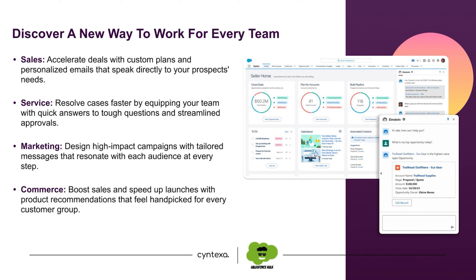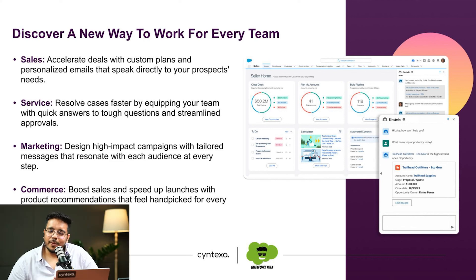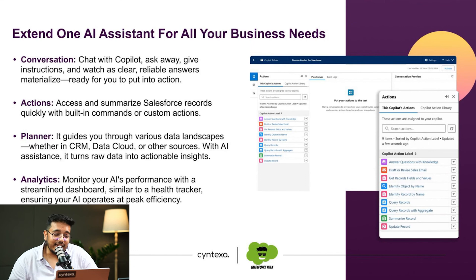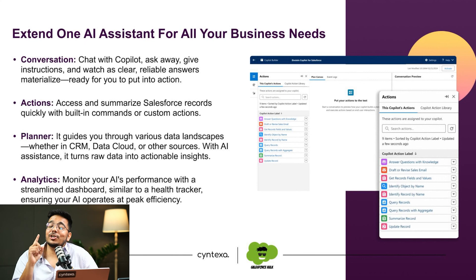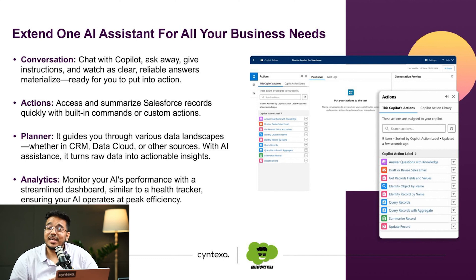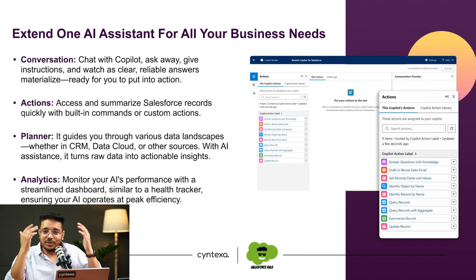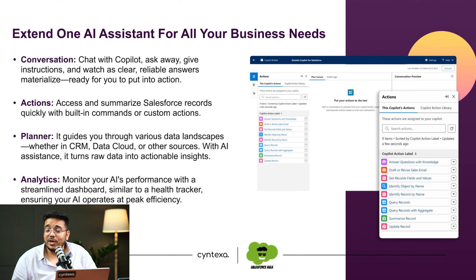Then we have what Copilot can do for us: from a conversational standpoint, we can converse with it and define actions — like summarize, and other things as well. Then we have the planner capability, which guides us on how data is being captured and how it reaches a decision. And we are not limited to that — we can see logs and reports as well, such as which Copilot actions are being most utilized, which person or department is utilizing it to the greatest extent. Reports can be created based on your business.